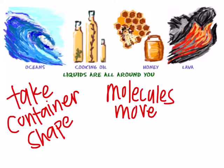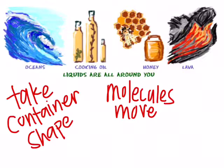Next we're going to talk about liquids. Liquids take the shape of the container that they're in. They have molecules that are able to actually move — the molecules are not just vibrating, they're actually moving past each other. Sometimes the molecules will attract each other and be attached. That's like the hydrogen bonds you learned about with water, because a lot of molecules have a slight positive or negative charge.